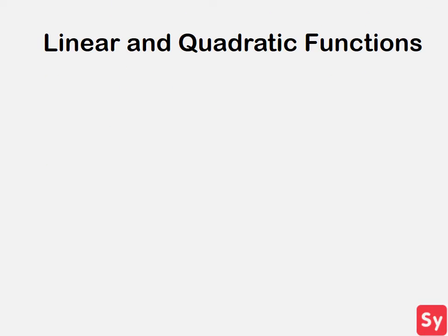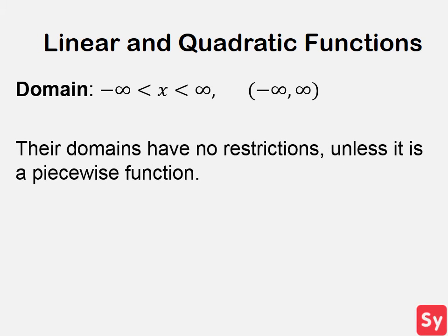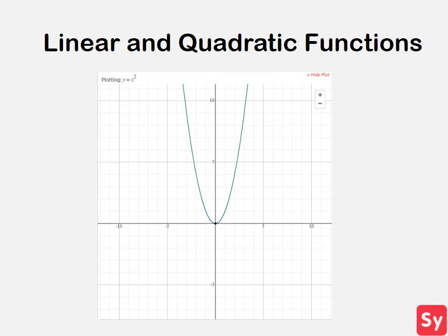First we will talk about the domain of linear and quadratic functions. The domain of linear and quadratic functions are negative infinity to infinity. This means that their domain has no restrictions unless it is a piecewise function. Here is an image of a quadratic function x squared. You can easily see that there is no restriction on the domain.